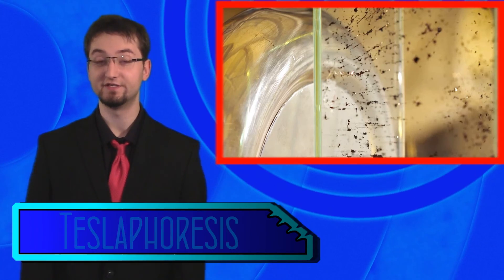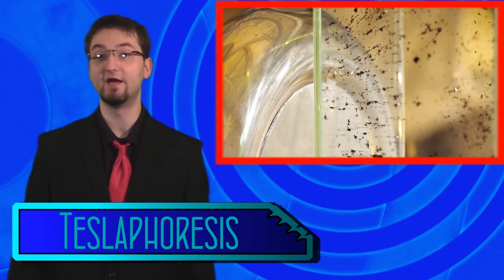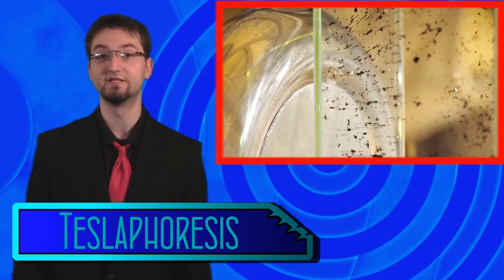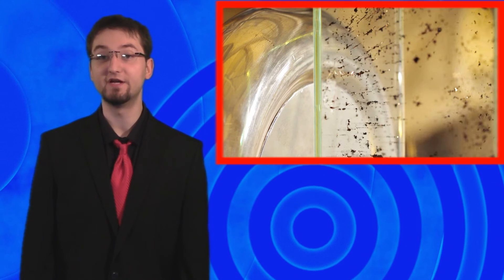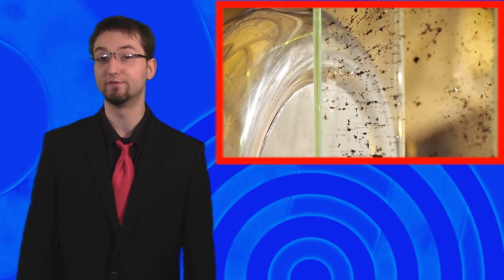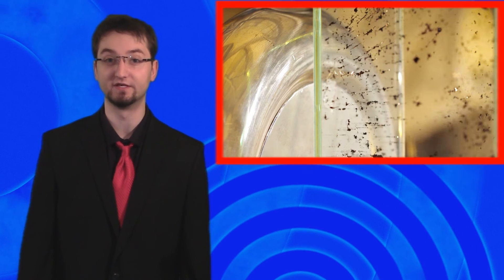Scientists at Rice University have been using electromagnetism to manipulate carbon nanotubes in a new process called teslaphoresis. Teslaphoresis has been found to be able to create circuitry and wires at a distance through the electromagnetic force without any physical connection.